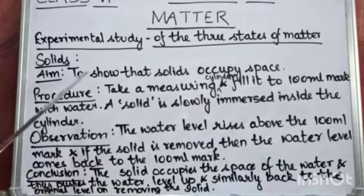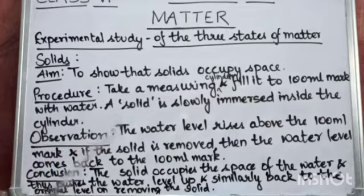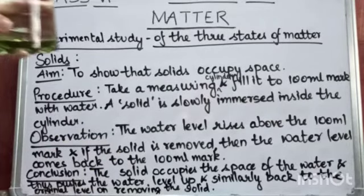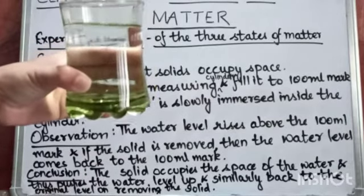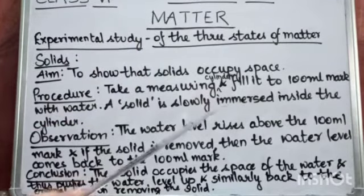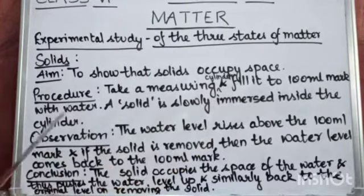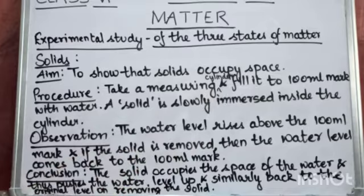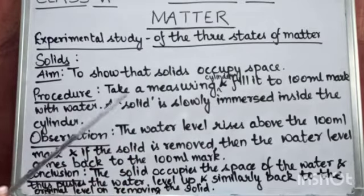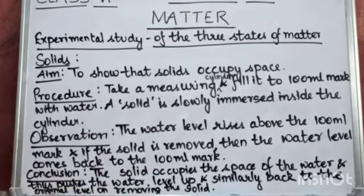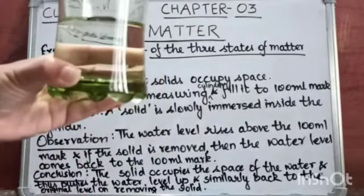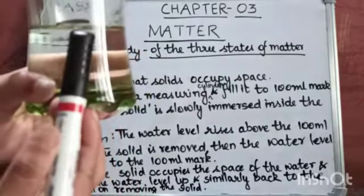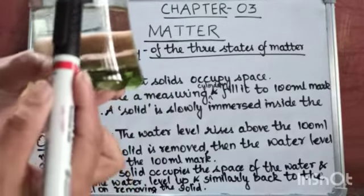So the first aim is to show that solids occupy space. Take a measuring cylinder — we don't have a measuring cylinder here, but what I have is this glass of water. And we have to mark it till 100 ml. A solid is slowly immersed inside the cylinder. Now as you can see, I have marked the water level here.